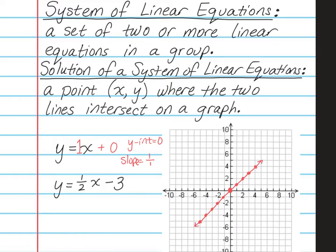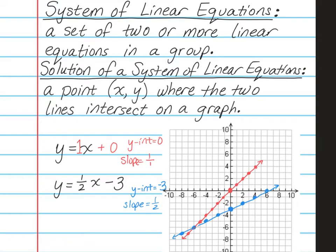Our next equation has a y-intercept of negative 3, so we go down to negative 3 and put a point. The slope is one-half, so we go up 1 over 2 several times in both directions. My hope is to find where these two lines intersect. I continue the first line a little bit further, and I notice that they do actually intersect — that point is shared by both the red graph (y equals x) and the blue graph (y equals one-half x minus 3).